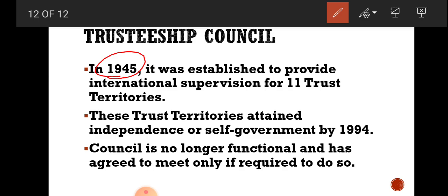The Trusteeship Council was established in 1945 to provide international supervision for eleven trust territories. After World War Two, the powerful countries supervised smaller territories to help them achieve independence.